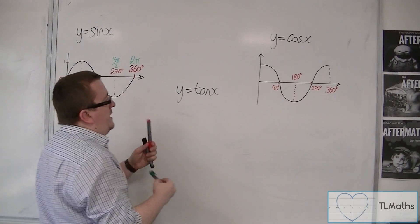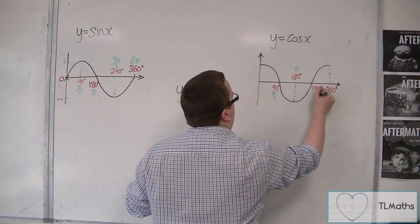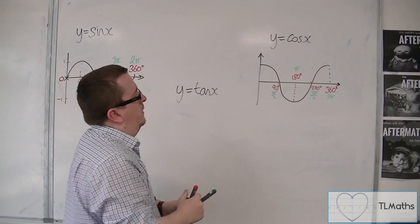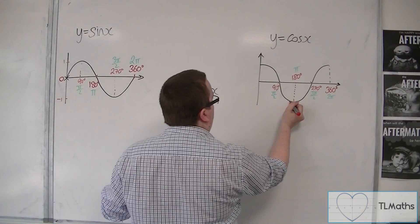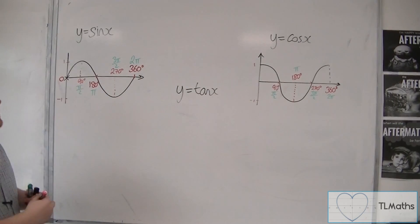In radians, these would be π/2, π, 3π/2, and 2π. The curve is going between, once again, minus 1 and 1.